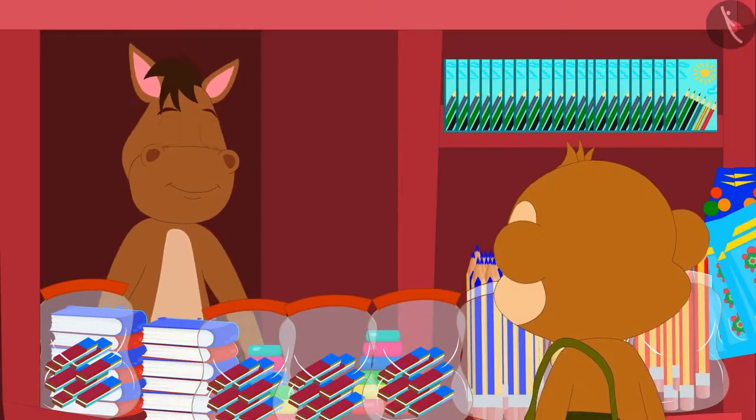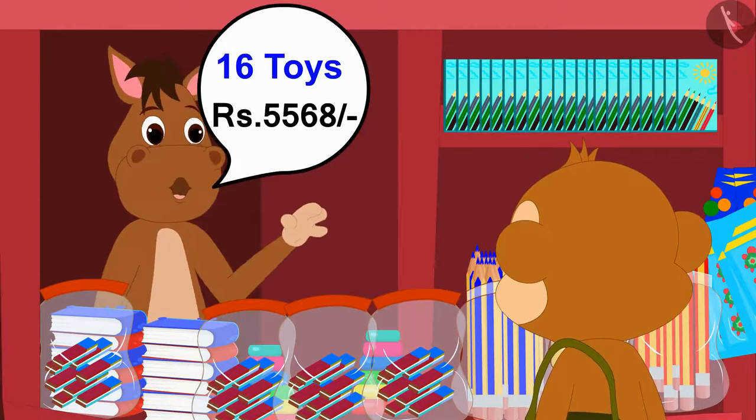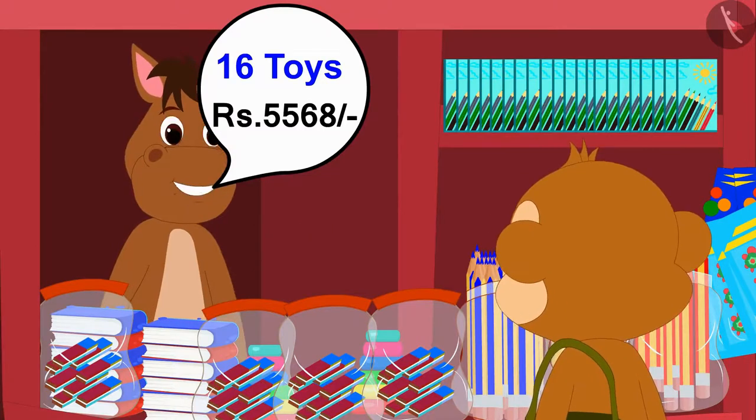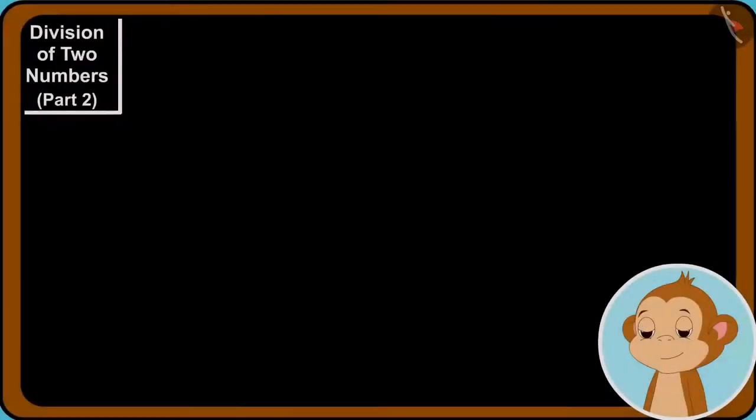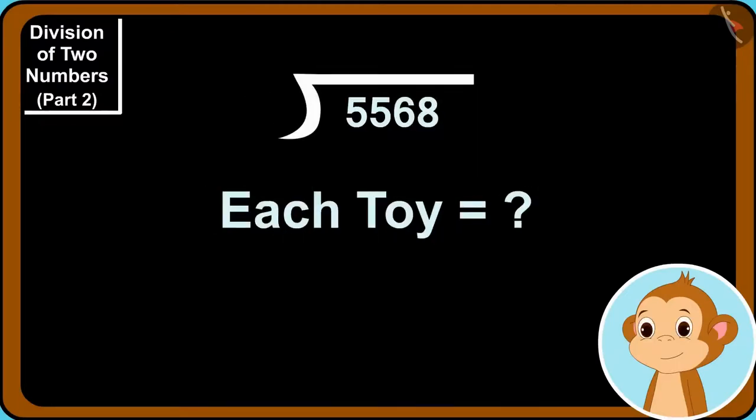Now, Babban bought 16 toys for 5568 rupees. Babban wants to find out how much each toy is worth by using the simple division process learned from Gaggu. Children, can you help Babban in finding the answer?